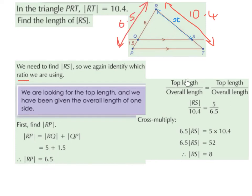We're going to have top length divided by overall length. In this example, RS is on the left of the equal sign, written as X, and 10.4 is also on the left. So it's going to be RS divided by 10.4, and this equals the top length of the other side, which is 5, divided by the overall length, which is 6.5.